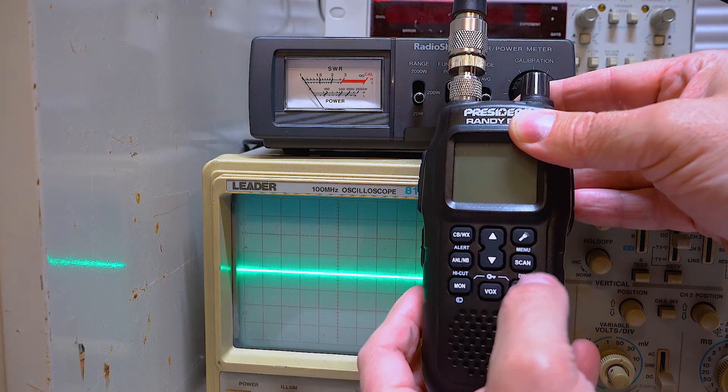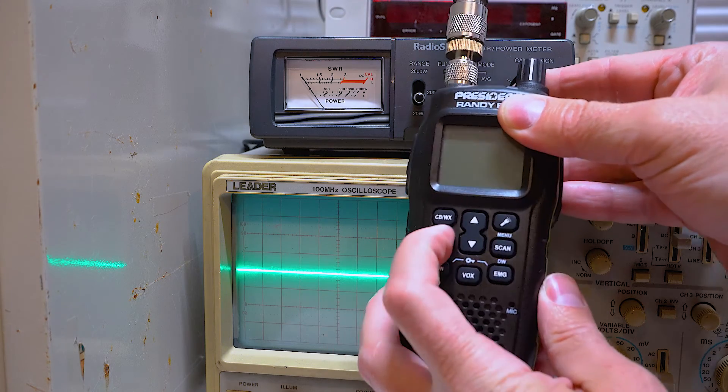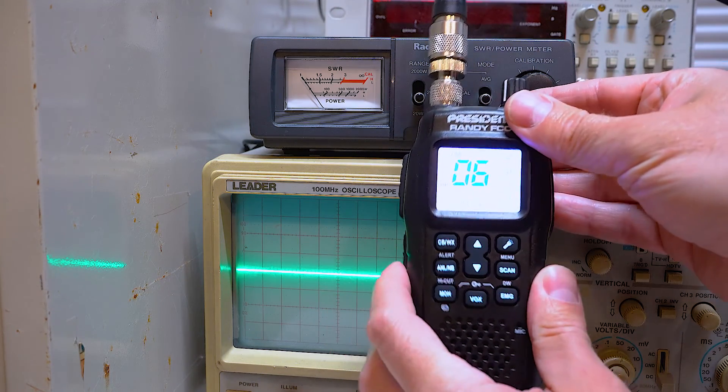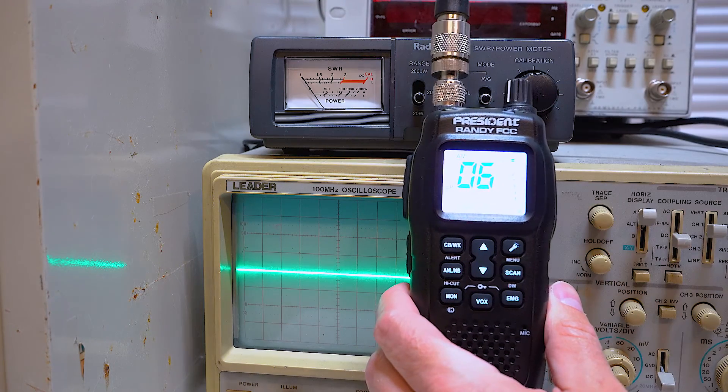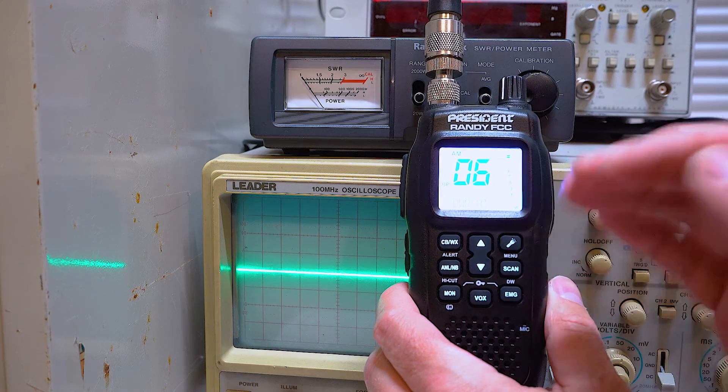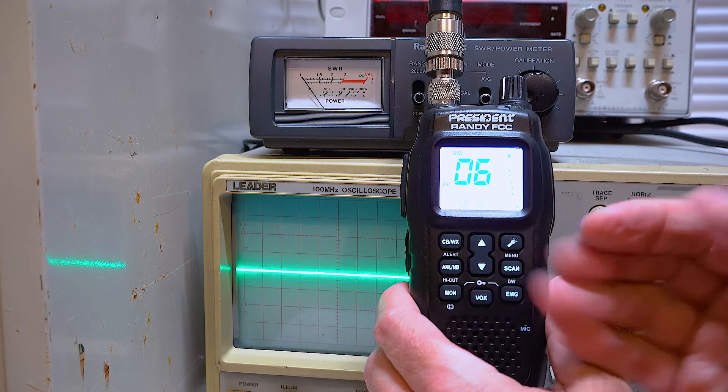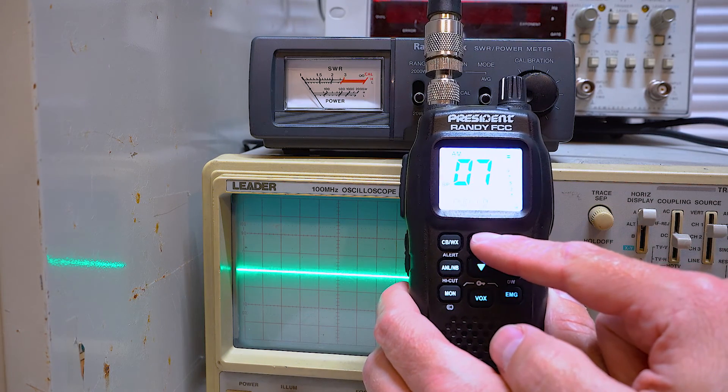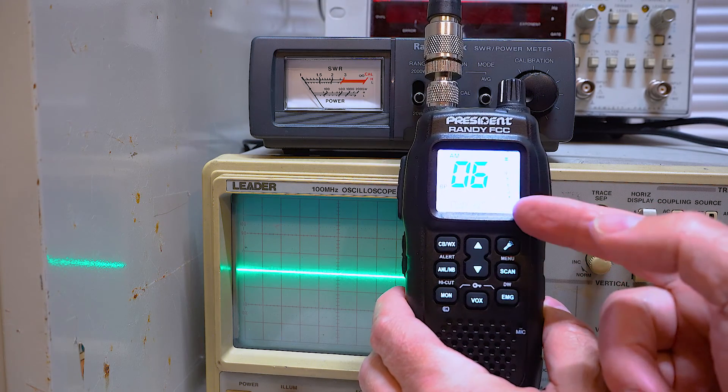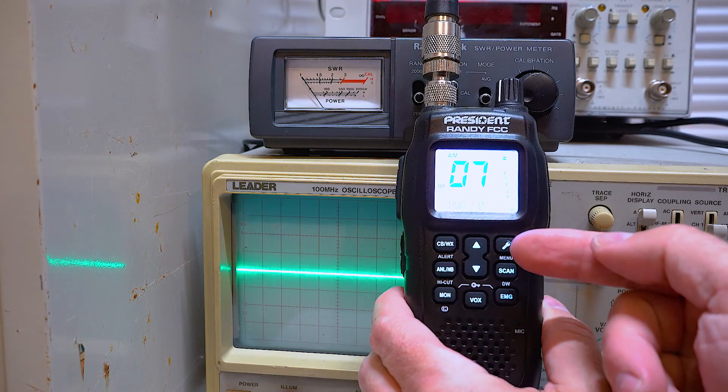First, I will turn off the radio and I'll show you how to get into this. You have to press the ANL and the scan button at the same time while you turn on the power. And you'll see these purple menus come up. The first one is the power high. That is for setting your high power, dead key, or carrier. The next option is your power low for setting your low power.